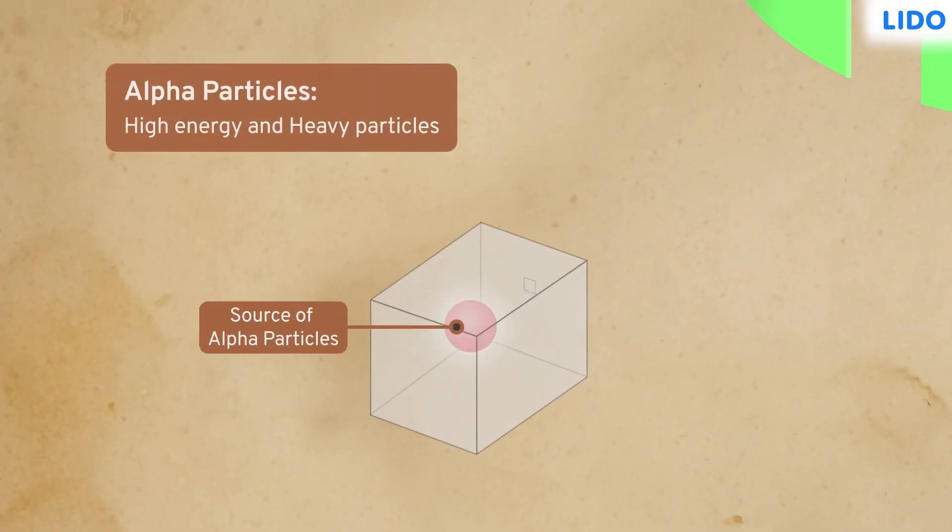He placed a source of alpha particles inside a lead container. If you notice carefully, this container had a small slit to ensure that only a small amount of alpha particles came out and travelled in a straight line.